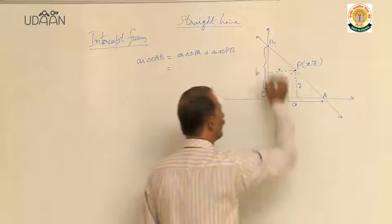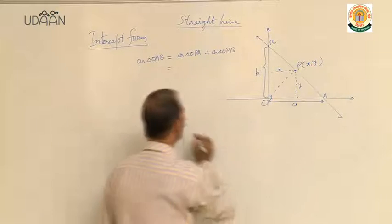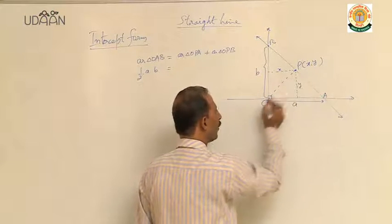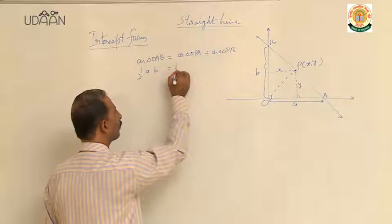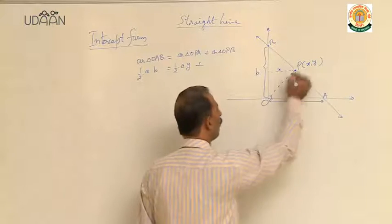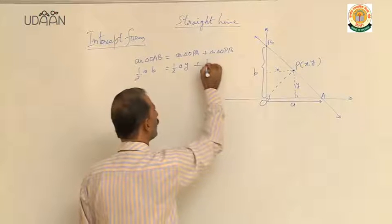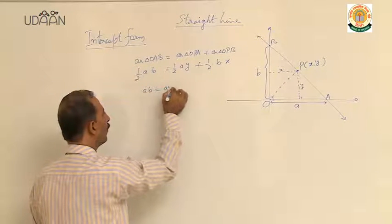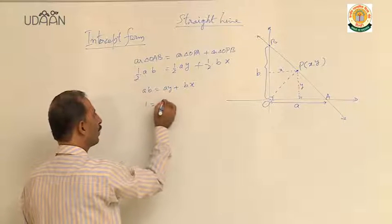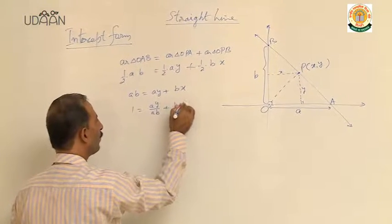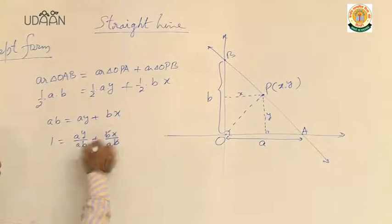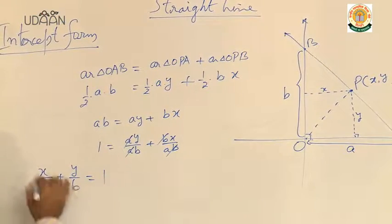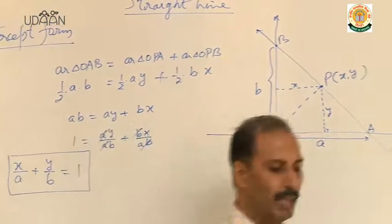What is the area of triangle OAB? This angle is 90 degrees, so area is half base into altitude. Area of triangle OPB: base is b and altitude is x. Cancelling the half, you get ab equals ay plus bx. Now divide by ab. It becomes ay upon ab plus bx upon ab. This b cancels, this a cancels. So you get x upon a plus y upon b equals 1. This form is known as intercept form.